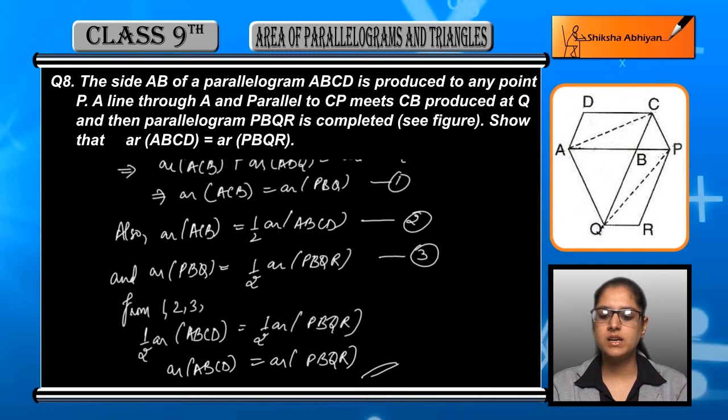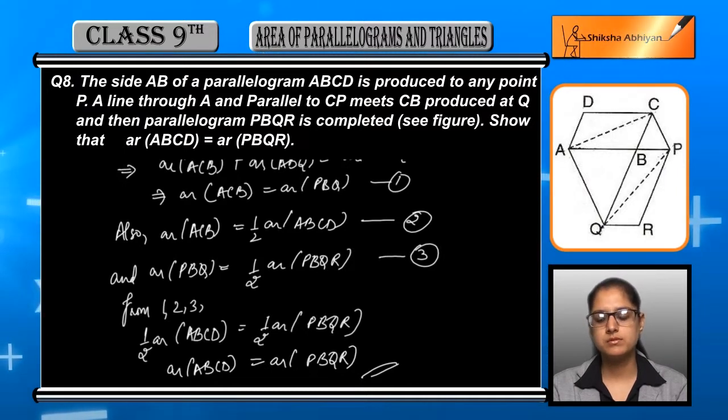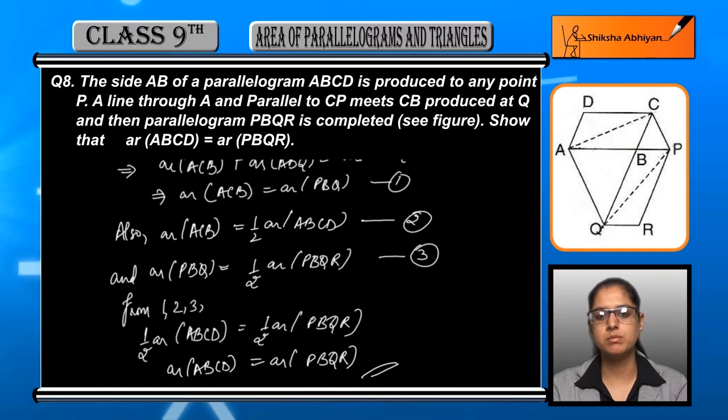This gives us that 1/2 ar(ABCD) = 1/2 ar(PBQR). Cancelling the halves from both sides, we get ar(ABCD) = ar(PBQR), which completes the proof.